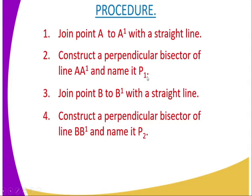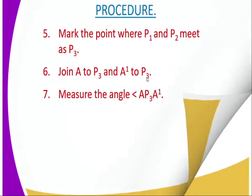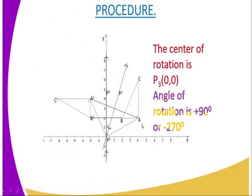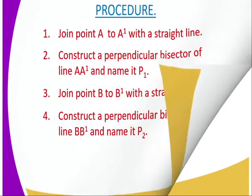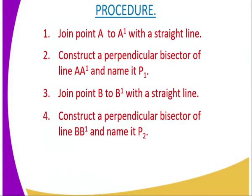You can see here — A is connected to A1, and there is a perpendicular bisector constructed to bisect that line. That perpendicular bisector becomes P1. Then after that you go to the next procedure.